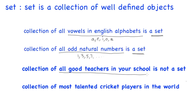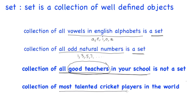Now consider the collection of all good teachers in your school. Is 'good teacher' well-defined or not? A particular teacher may be your favorite, but that same teacher may not be a favorite to your friend. So 'good teacher' is not well-defined, and therefore the collection of good teachers in your school is not a set.